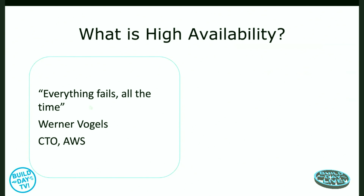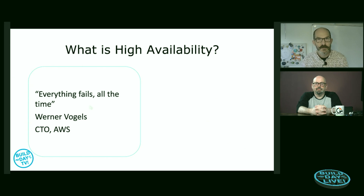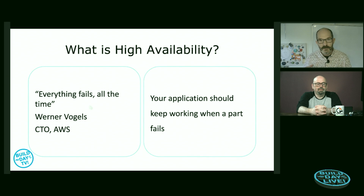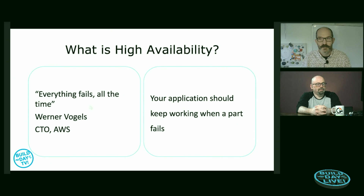One of the fundamental ideas that I keep coming back to as I talk about AWS is this quote from Werner Vogels: everything fails all the time. This is one of the guiding ideas underneath how you approach architecture on AWS. Essentially, your application shouldn't fail just because something underneath it fails. Things are going to fail, and your application should continue to operate.